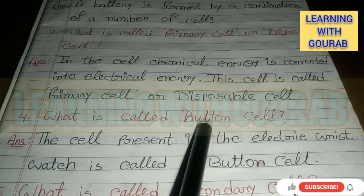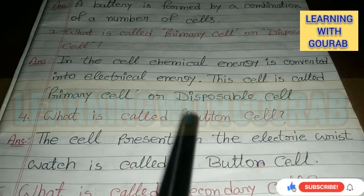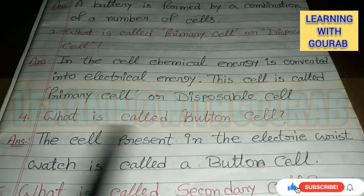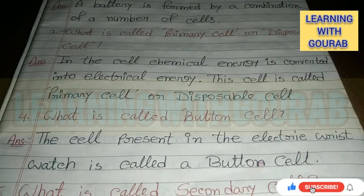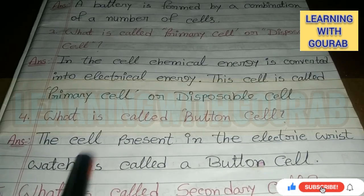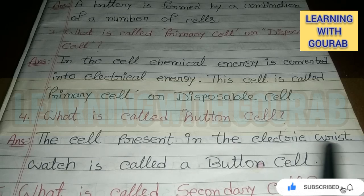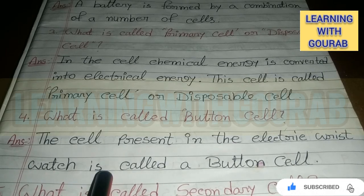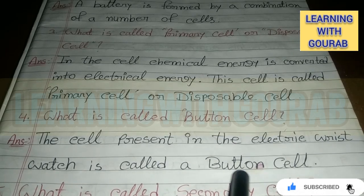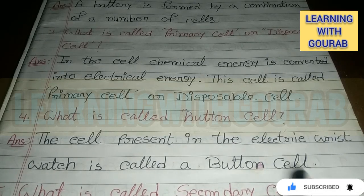What is called a button cell? Answer: The cell present in an electric wrist watch is called the button cell.